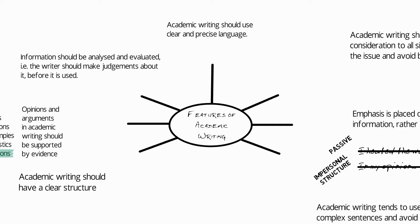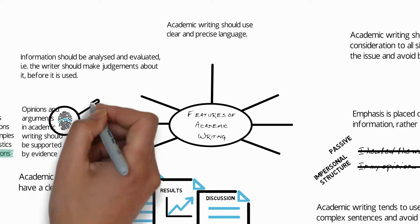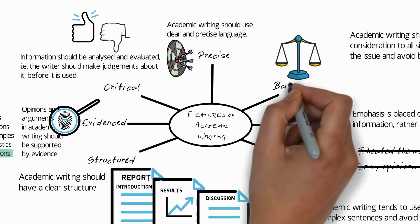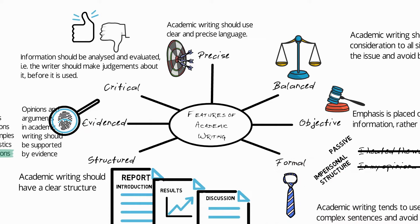In the video on what is academic writing, we looked at different features of academic writing, namely that it is structured, evidenced, critical, precise, balanced, objective, and formal.